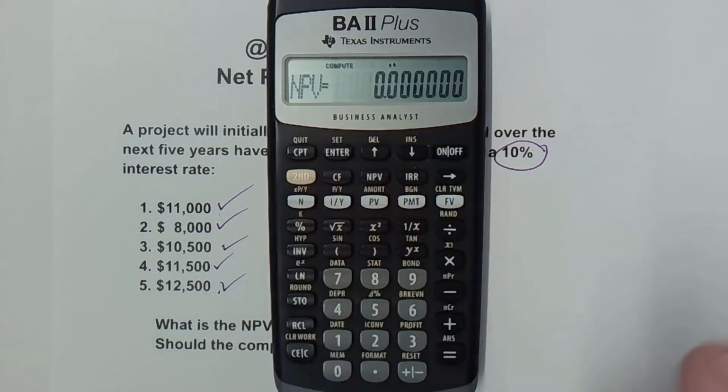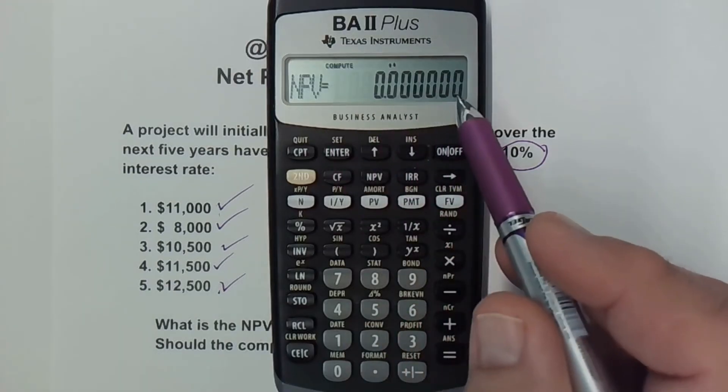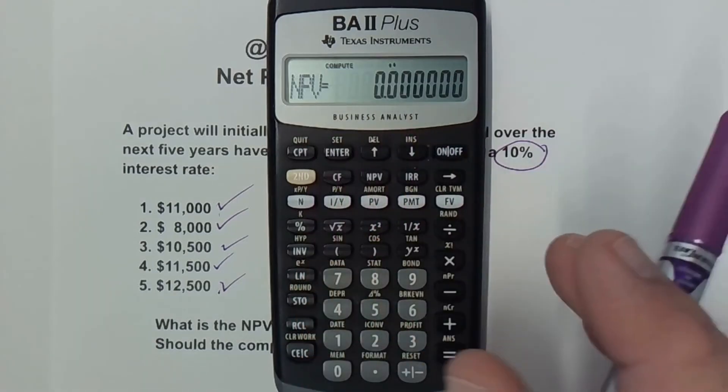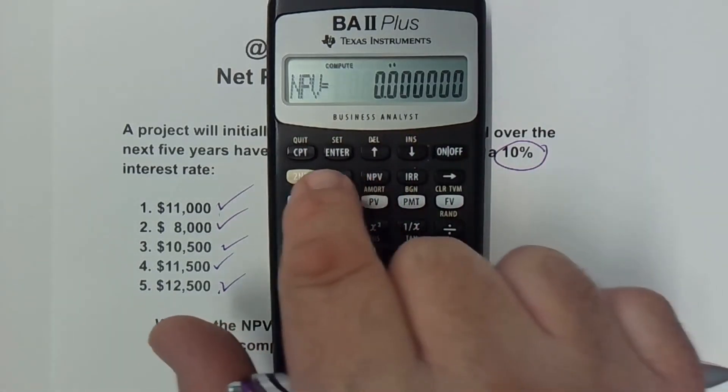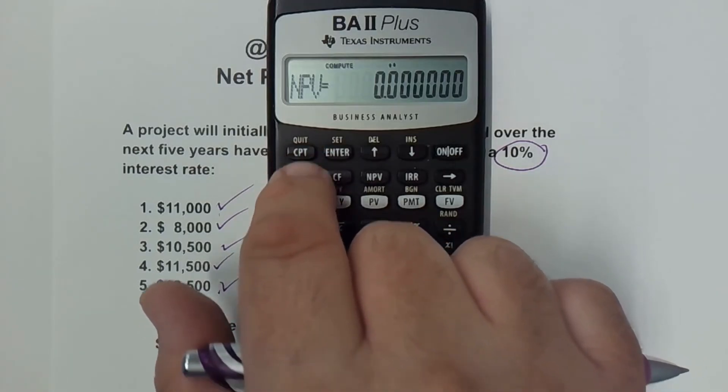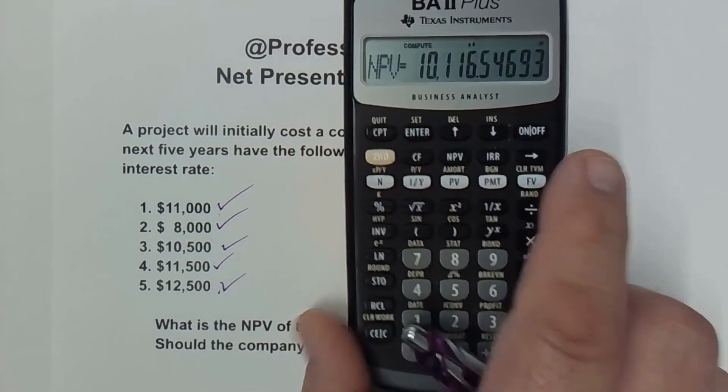I arrow down and you see the NPV, it gives me zero. That's not the answer. We're just going to compute it now. So now we're ready for NPV. We're going to hit the compute button, which is the CPT button. It's right above the second button. I just hit CPT and it calculated it.